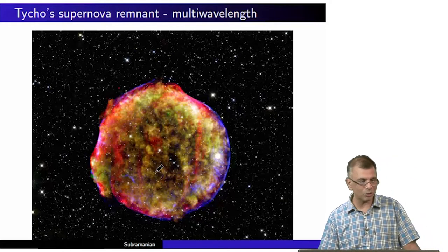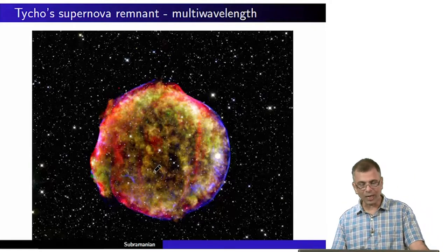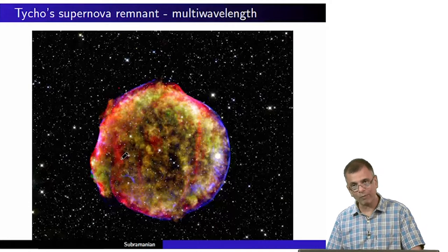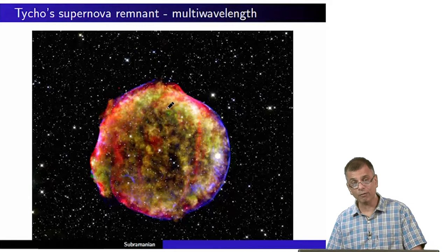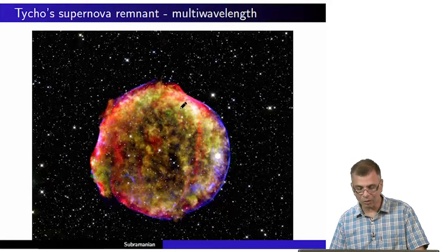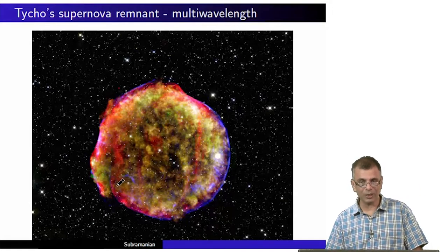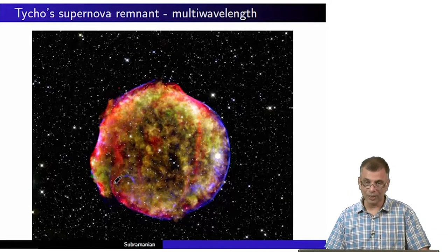The main thing you should take away from this picture is that there are different wavelengths present, indicative of the fact that there are different temperatures present as the shock wave has passed through. All of this represents shocked material — material that has experienced a shock wave passing through it.